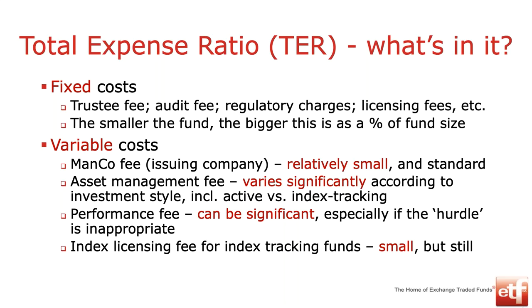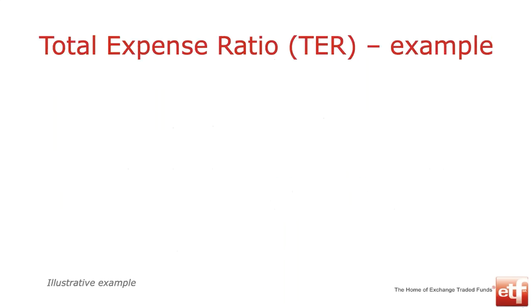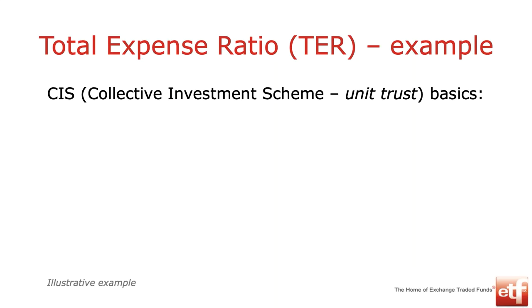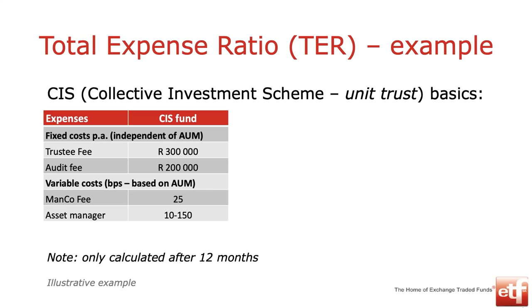When it comes to index tracking funds, there's an index licensing fee — yes, it's small, but it is there. So let's look at an example of a CIS — a collective investment scheme — really just a modern word for the better-known unit trust, or as it's known in international markets, a mutual fund. Let's look at those basic components of the fixed costs and the variable costs.